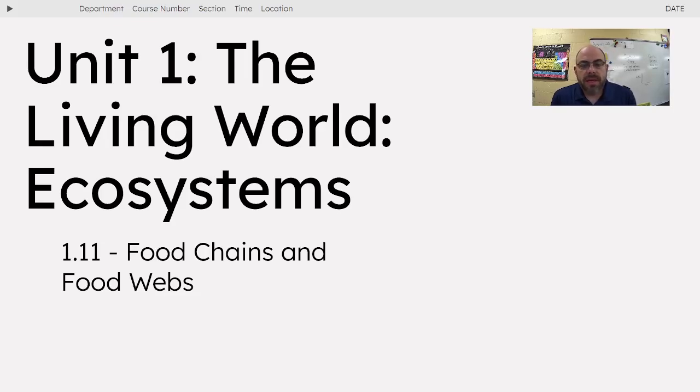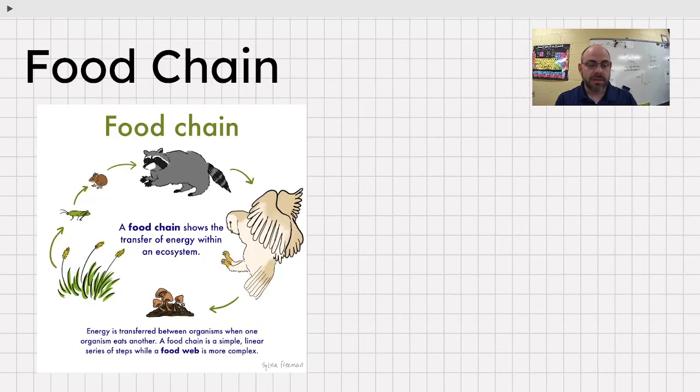Hello, my name is Mr. Chipman and I teach biology, AP biology at Murray High School in Murray, Kentucky. This is 1.11 food chains, food webs. We're looking at AP environmental science today and let's look at these things.